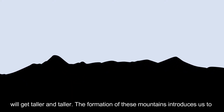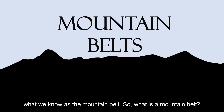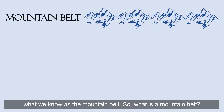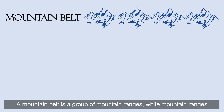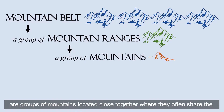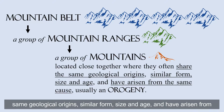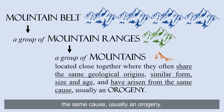The formation of these mountains introduces us to what we know as the mountain belt. So what is a mountain belt? A mountain belt is a group of mountain ranges. Mountain ranges are groups of mountains located close together where they often share the same geologic origins, similar form, size, and age, and have arisen from the same cause, usually an orogeny.